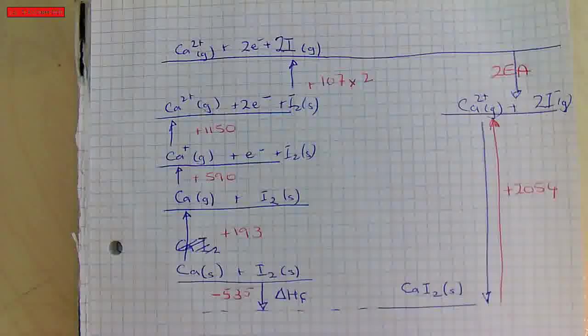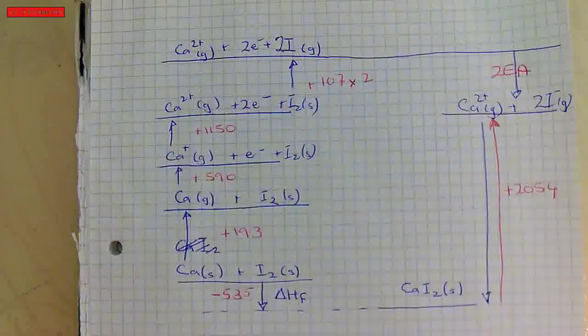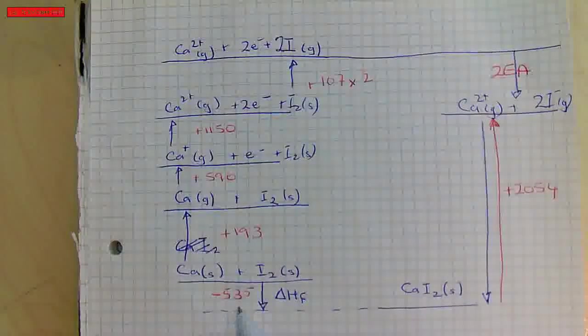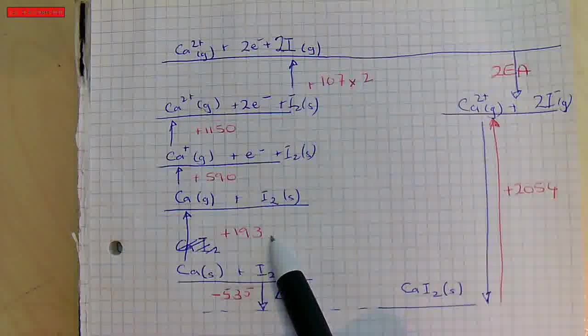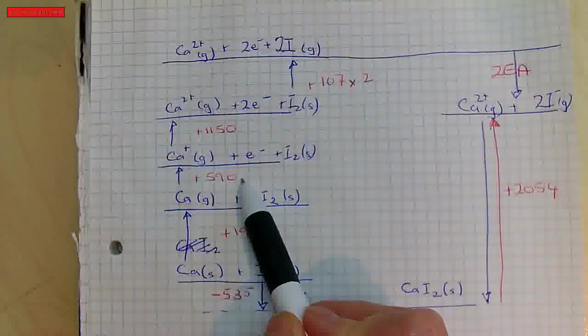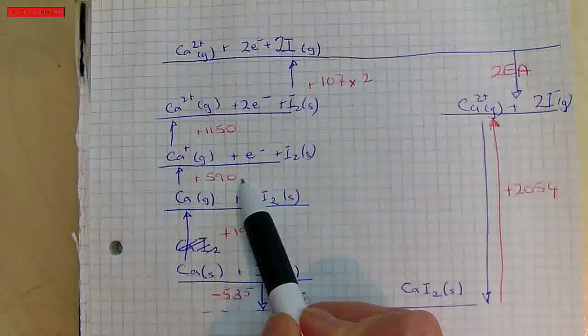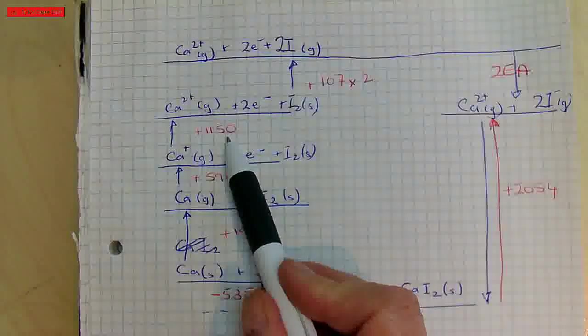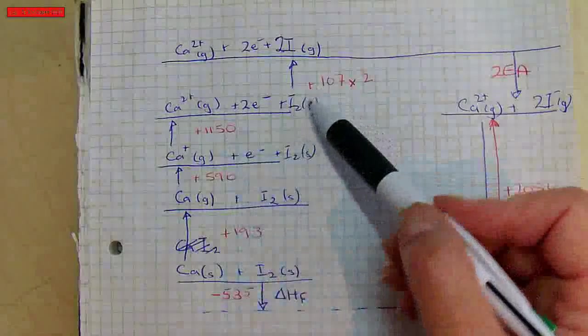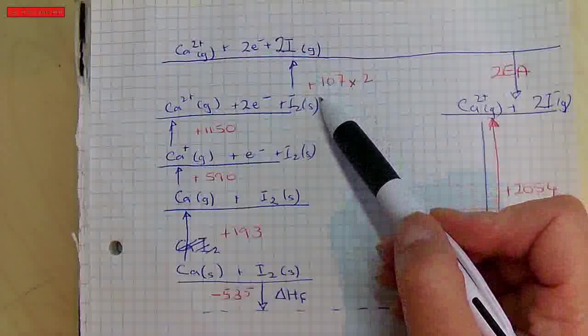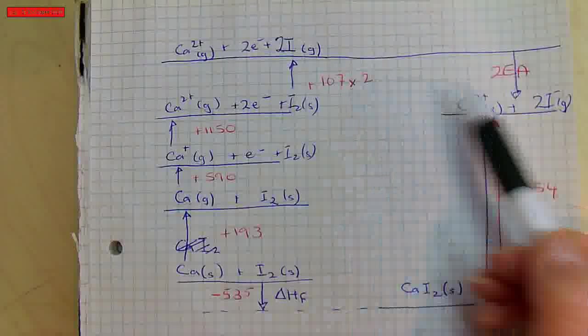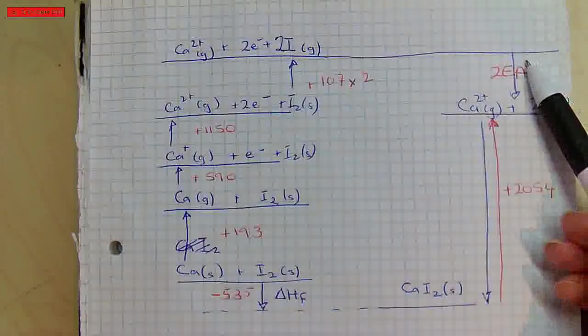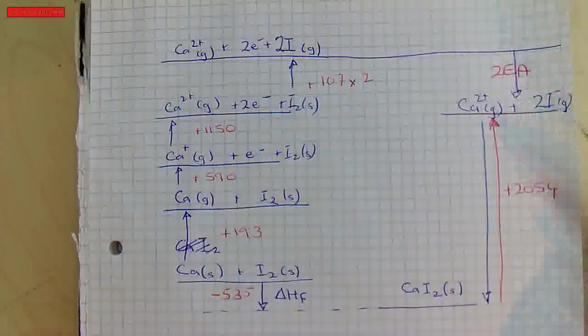I'm just going to go ahead and put the values on these. Okay, so I've gone ahead and I've put all the values on here. So this is the enthalpy of formation that was given, the atomisation enthalpy for calcium, the first electron ionisation energy for calcium, the second electron ionisation energy for calcium, the atomisation enthalpy for iodine and I made two iodine atoms.